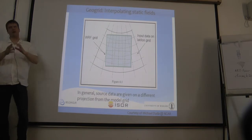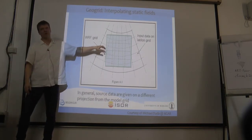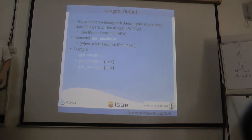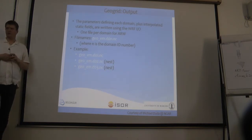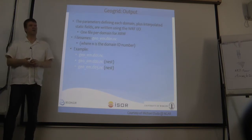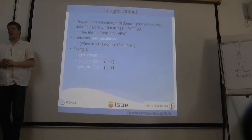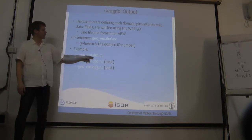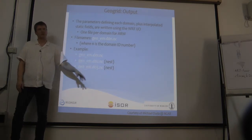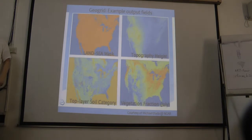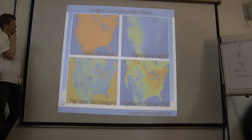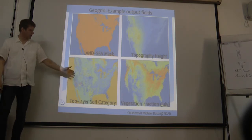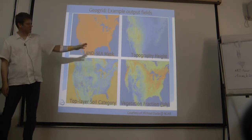You need to rotate the WRF model output into earth coordinates. The GeoGrid output creates one file per domain, labeled geo_em.d01, d02, d03, etc. Output fields include the land-sea mask, topography, top layer soil categories, and vegetation fractions. The UNGRIB program reads output data from the global models in GRIB format — it can handle both GRIB edition 1 and the more recent edition 2 — and extracts the meteorological fields. It can also compute derived fields: for example, if relative humidity is not in the model output but you have temperature, pressure, and specific humidity, UNGRIB can calculate relative humidity.